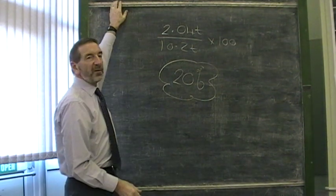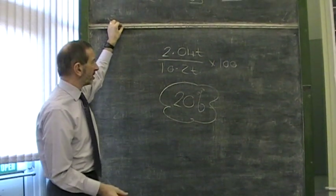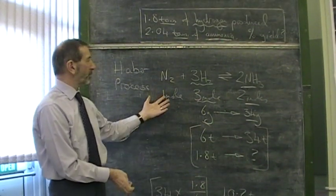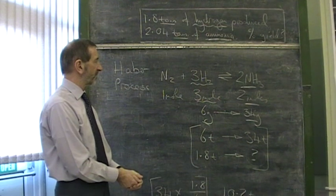So, this is only one-fifth successful. 20% yield. You know, when it comes to the Haber process, that's the way it is. The Haber process is not a very successful process.